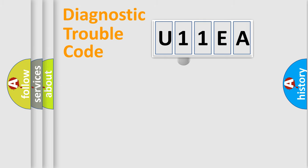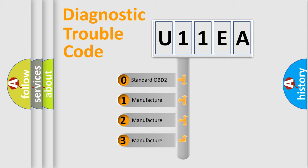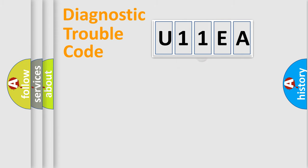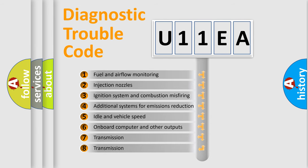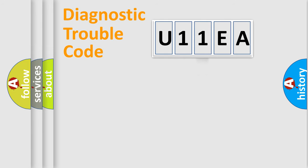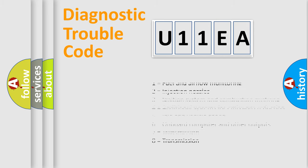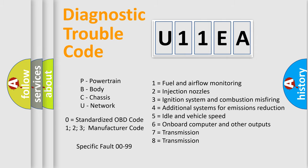This distribution is defined in the first character of the code. If the second character is expressed as zero, it is a standardized error. In the case of numbers 1, 2, or 3, it is a more specific expression of the car-specific error. The third character specifies a subset of errors. This distribution is valid only for the standardized DTC code. Only the last two characters define the specific fault of the group, and such division is valid only if the second character code is expressed by zero.